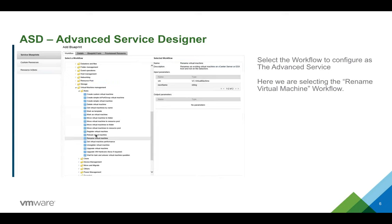When we browse through VCO to look at all the different workflows we can use, you will see everything you've created as well as everything from the library. We are selecting the rename virtual machine workflow, which allows us to rename a virtual machine in vCenter. A user might provision a VM for one purpose and then need it for a different purpose later on. This is a tree view and a live view of your VCO server — if you add a workflow it instantly appears with no synchronization needed.